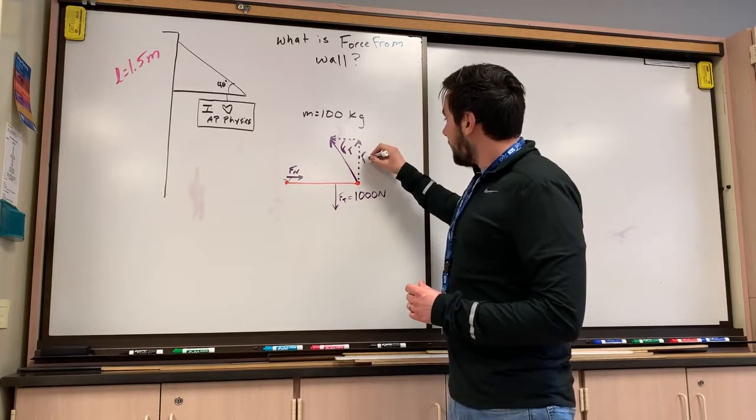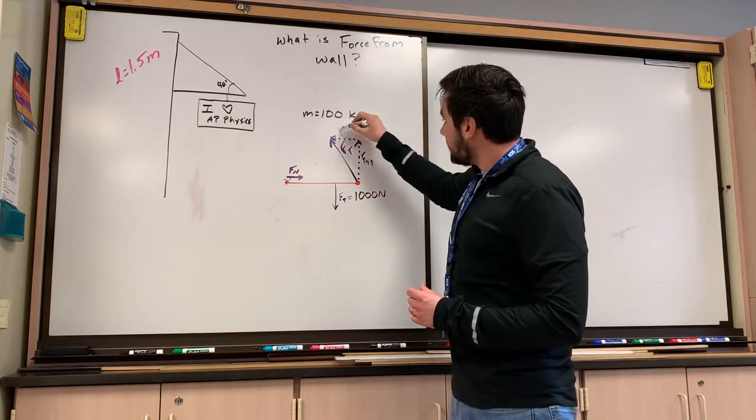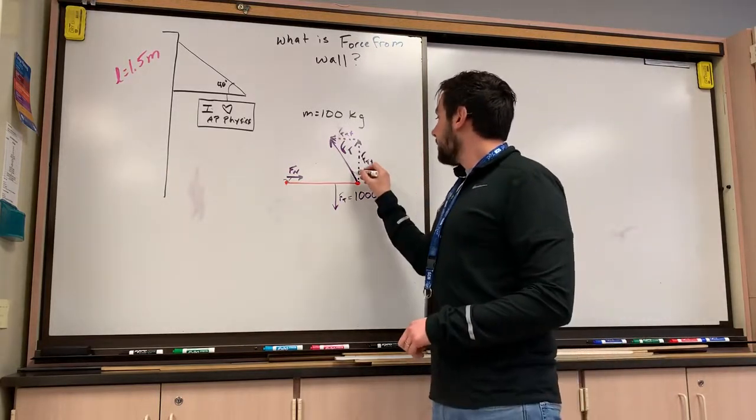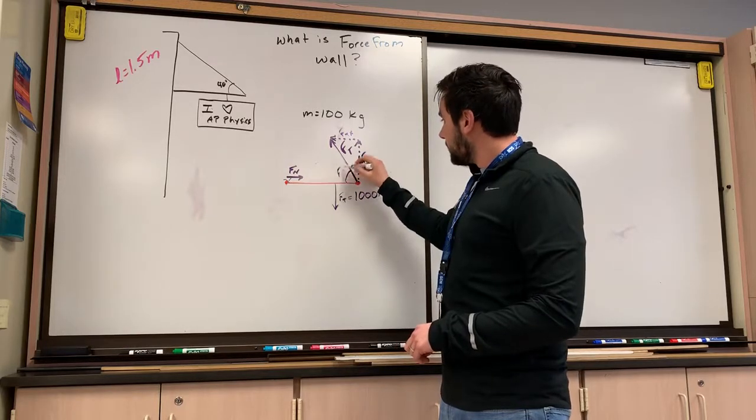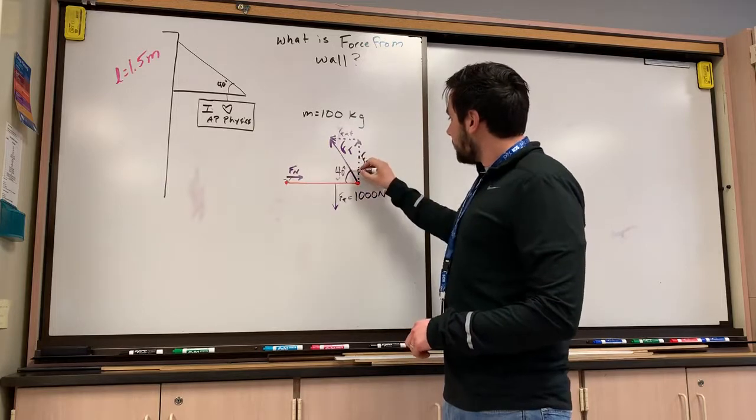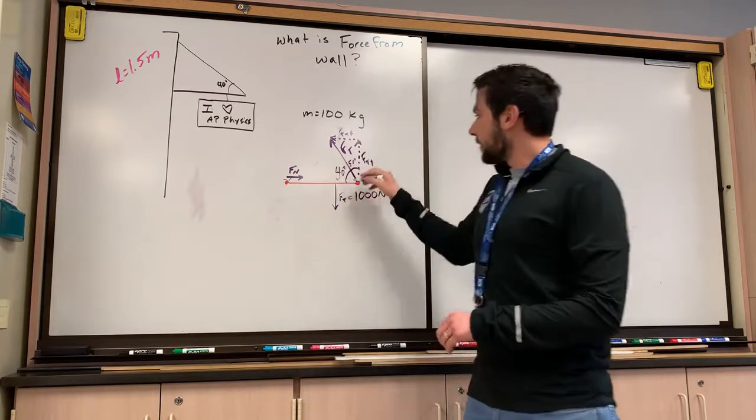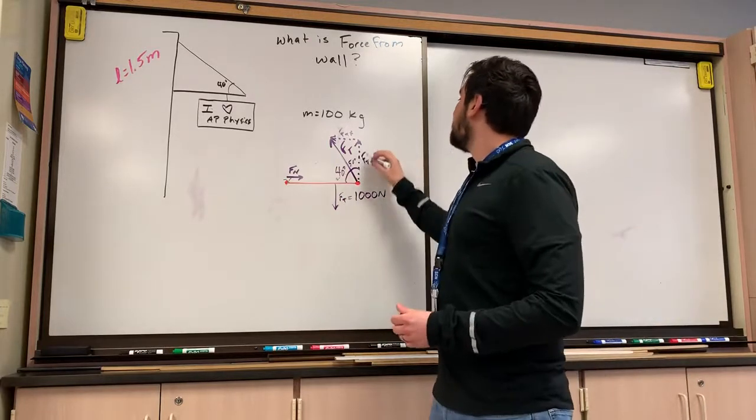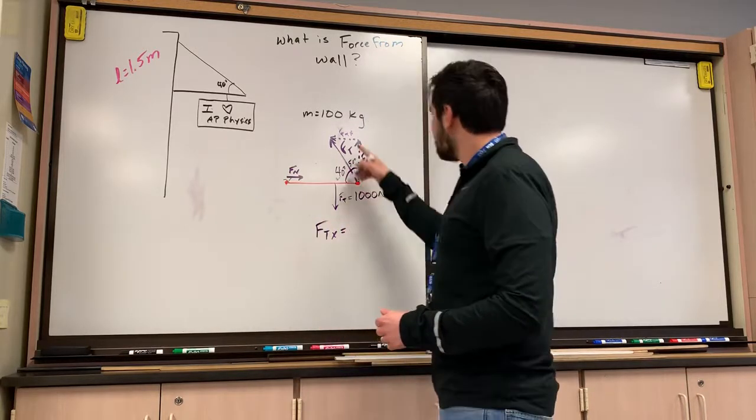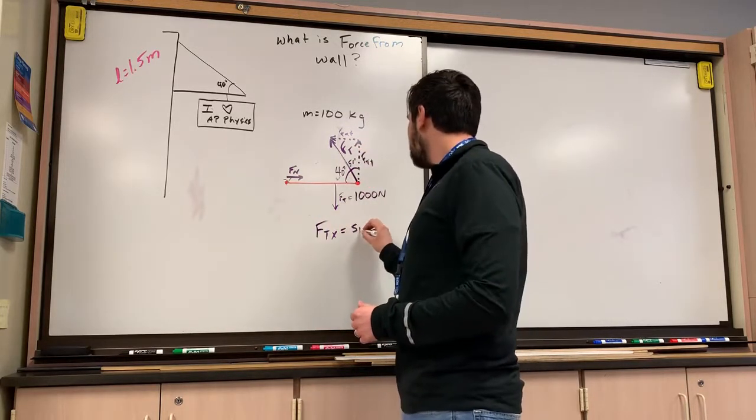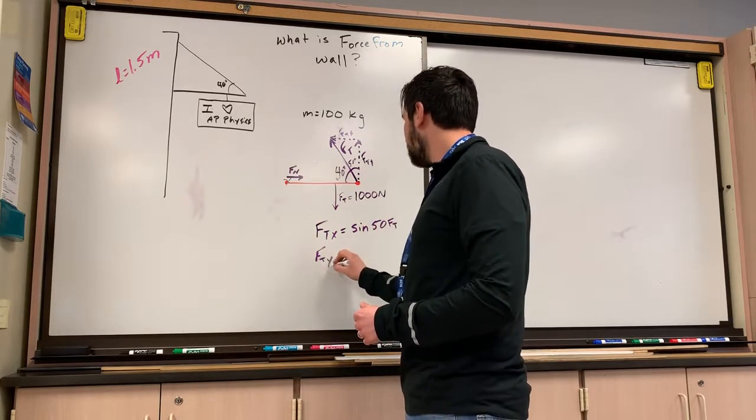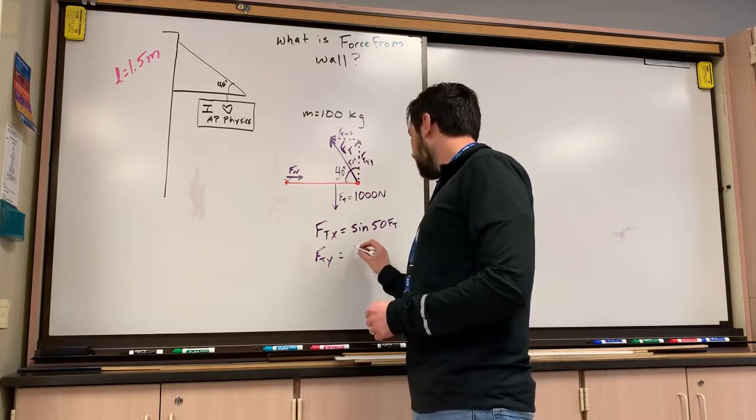So we've got FTY and FTX. So how can we solve, how can we find these values? Well, we know that this angle is 40 degrees. So this angle becomes 50 degrees. I didn't draw that to scale very well. But we know that then FTX is sine of 50 times FT. And we know that FTY is cosine of 50 times FT.